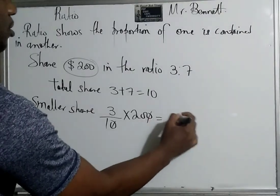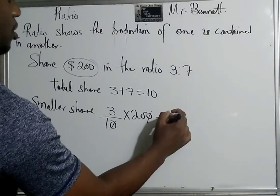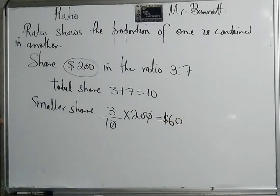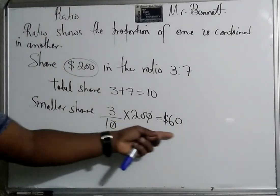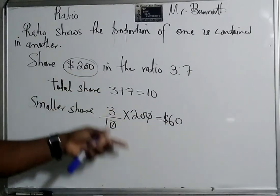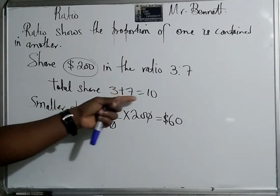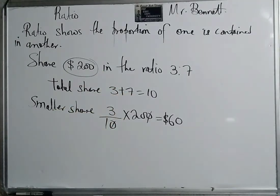So in all it's ten shares, but out of the ten, the smaller share would be only three out of the ten. Now let's multiply by the 200, so this cancels, this divides by ten, and three times that would be 3 times 20, so the first, the smaller share would be sixty dollars.